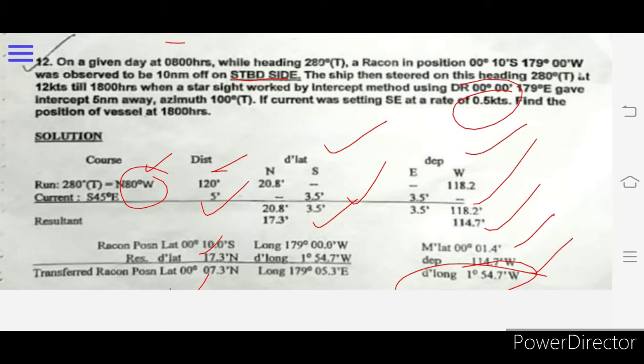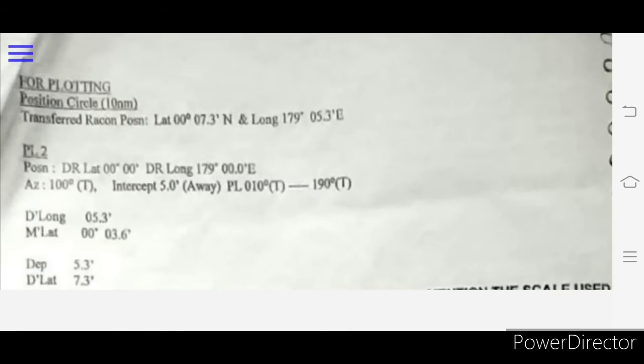For longitude to find my D'long, I calculated my mean latitude. Having departure, I calculated my D'long. After applying my D'long I got my transferred reckoning position of longitude. This is my transferred position.